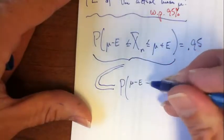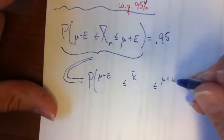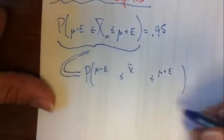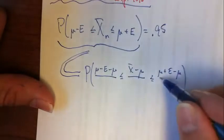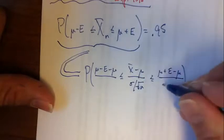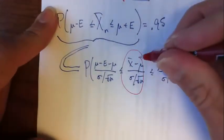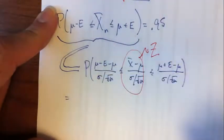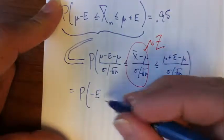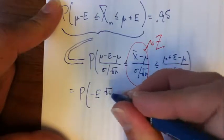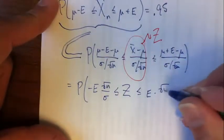So mu minus e less or equal to x bar less or equal to mu plus e. I'm going to subtract the mean for x bar everywhere, and then divide by standard deviation for x bar everywhere, which is sigma over root n. All of this stuff, I know that this stuff behaves like a standard normal. So this is just negative e times root n over sigma is less or equal to z is less or equal to e times root n over sigma.